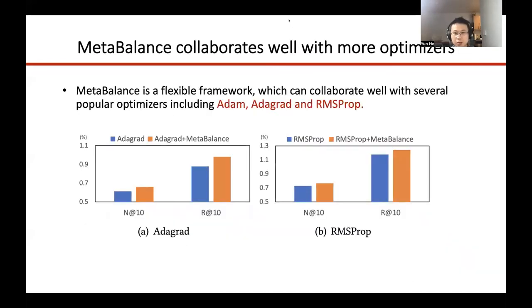Moreover, Meta-Balance is a flexible framework which can collaborate well with other popular optimizers, including Adam, Adagrad, and RMSProp, as shown in these two figures. With the help of Meta-Balance, these optimizers also achieve better performance.